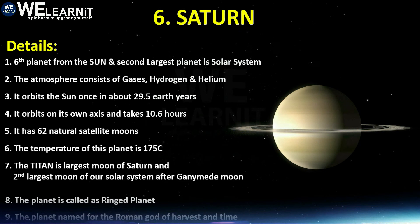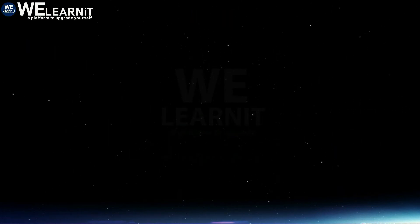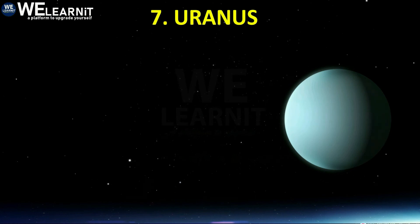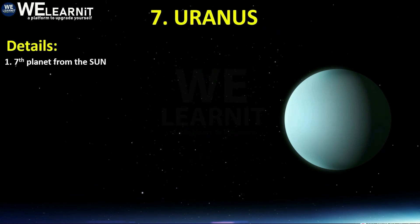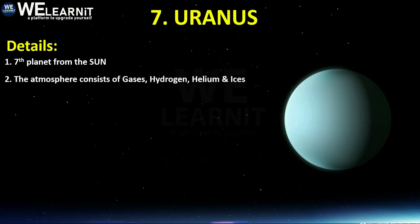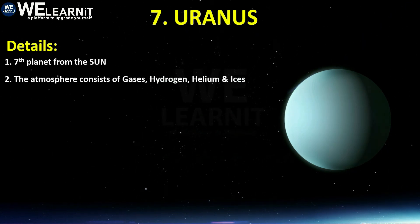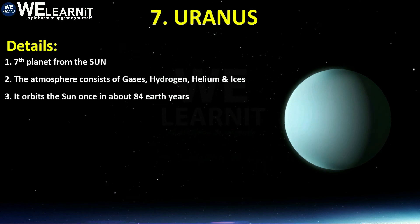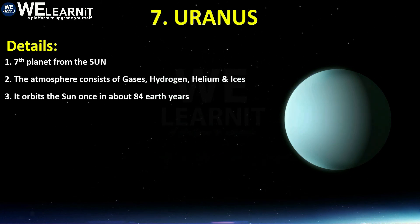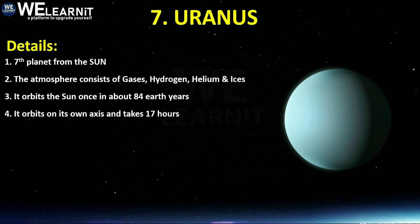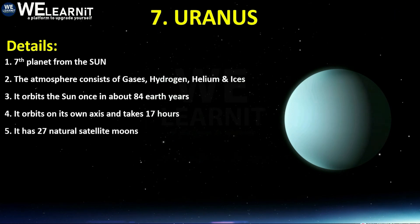The seventh planet is Uranus. Its atmosphere consists of hydrogen, helium, and ices. It orbits the Sun once in about 84 Earth years. Uranus orbits on its own axis and takes around 17 hours to complete one round. It has 27 moons around it.